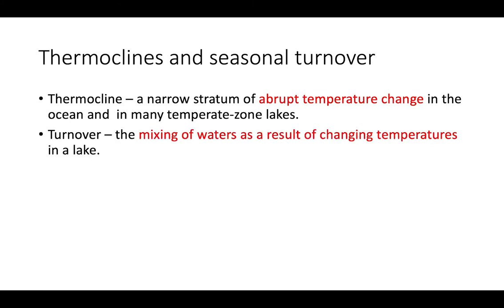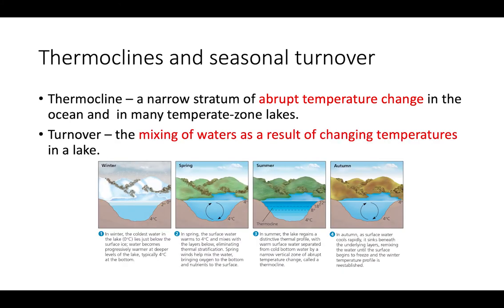As a result of the thermocline, you often have seasonal turnover — the mixing of waters due to temperature changes in the body of water. For example, in winter the surface ice is zero degrees Celsius, and as you go deeper the water is actually warmer, reaching about four degrees Celsius at the bottom.